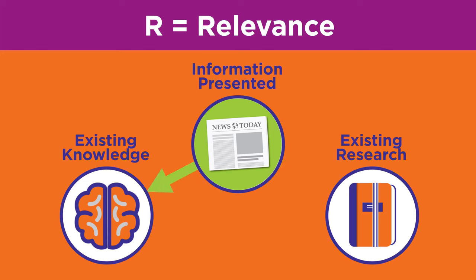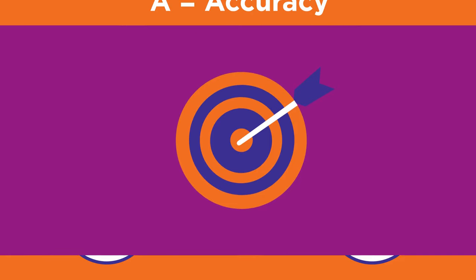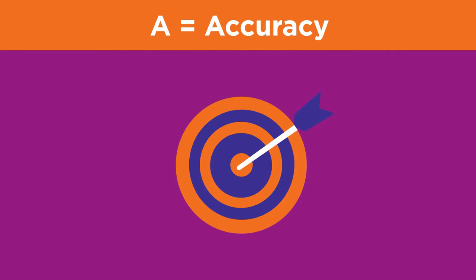Another question to ask yourself is: does the source add something new to your knowledge of the topic, or does it back up information you have already found? Both new information and information that supports what you've learned elsewhere are important. Finding information in multiple sources confirms that it is accurate and helps you build a better argument. This relates to the first A in TRAP: accuracy.